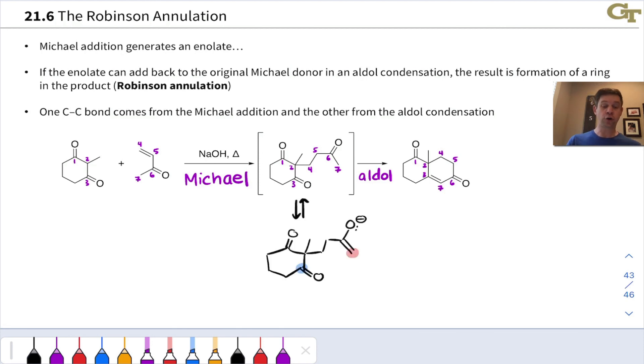First of all, let's start with the aldol condensation and recognize that carbon seven can form an enolate. That enolate can add here and this will result in aldol addition to give an alkoxide like this. That alkoxide can be protonated, for example, by water. We're using something like sodium hydroxide base and heat to drive the condensation.